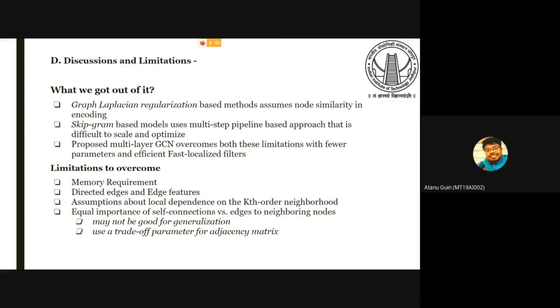Still GCN has some limitations. For large graphs, it may require larger memory and you still need to use undirected edges in place of directed ones because GCN cannot be dealt with directed edges. Also, it is assumed that local dependencies are there for a graph, which may not be good for generalization. This can be overcome by using some trade-off parameters. Thank you.